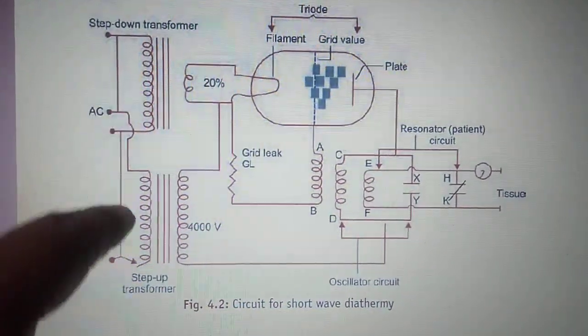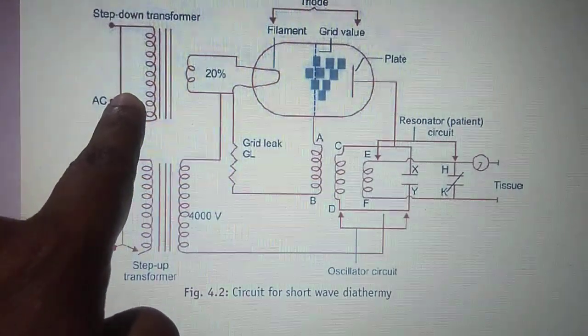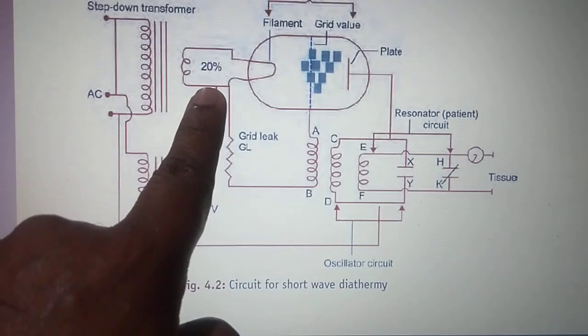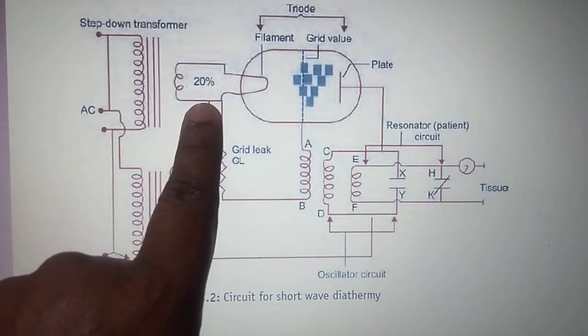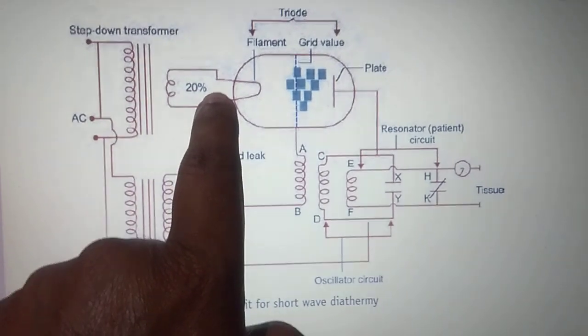Coming back to the starting, there are two primary coils and two transformers. The step-down transformer is connected to a filament, also called a triode filament, and this filament is getting heated.